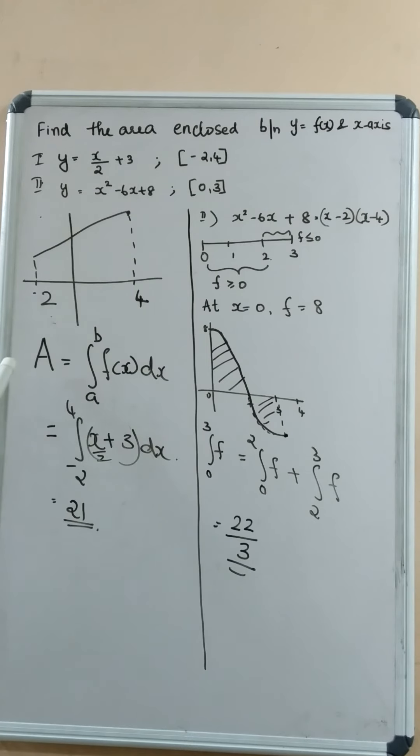And we know that the area is given by A is equal to integral a to b f of x dx. That is, we have to integrate the function f of x from the point minus 2 to 4, integral from minus 2 to 4, x by 2 plus 3 dx.